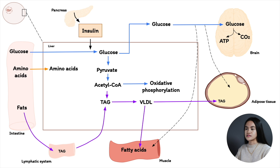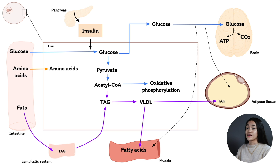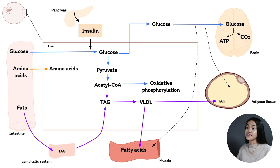With fatty acid synthesis, NADPH is required and can be obtained from the pentose phosphate pathway or from malic enzyme activity, which converts malate to pyruvate in the cytosol. In muscle, fatty acids are oxidized to yield ATP.